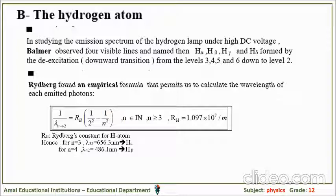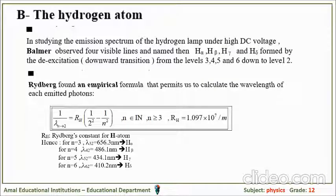For n=4 going from level 4 down to level 2: λ = 486.1 nm, called Hβ. For n=5: λ = 434.1 nm, called Hγ. For n=6: λ = 410.2 nm, called Hδ. For n greater than 7 and above, the radiation wavelength is invisible — these cannot be observed.